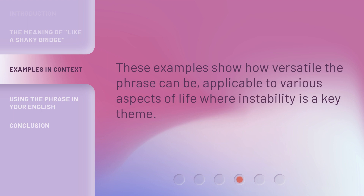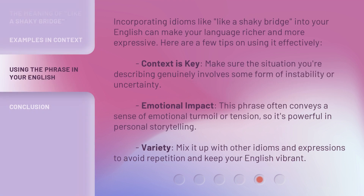These examples show how versatile the phrase can be, applicable to various aspects of life where instability is a key theme. Here are a few tips on using it effectively. Context is key — make sure the situation you're describing genuinely involves some form of instability or uncertainty. Emotional impact: this phrase often conveys a sense of emotional turmoil or tension, so it's powerful in personal storytelling. Variety: mix it up with other idioms and expressions to avoid repetition and keep your English vibrant.